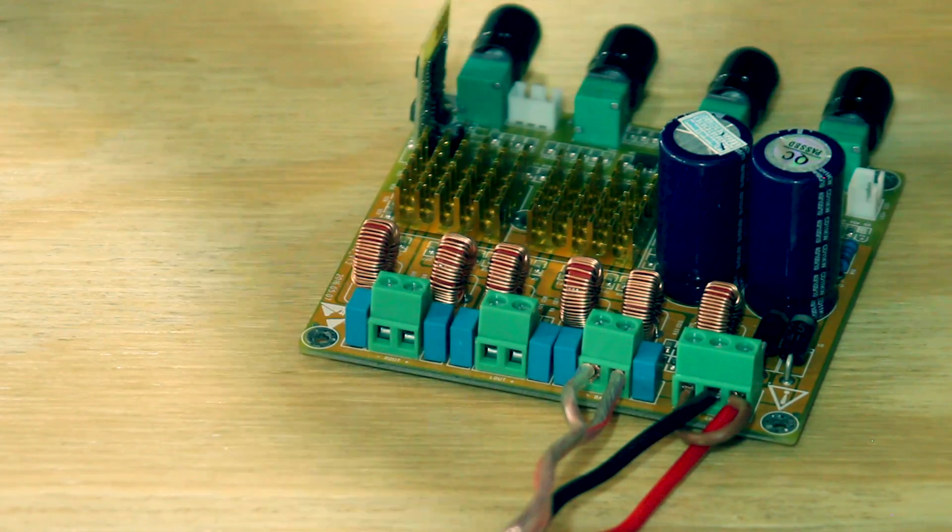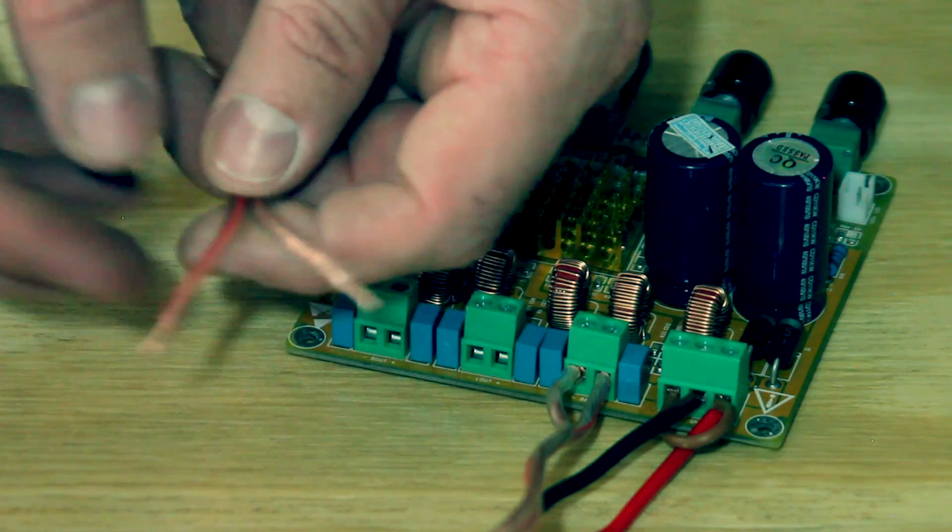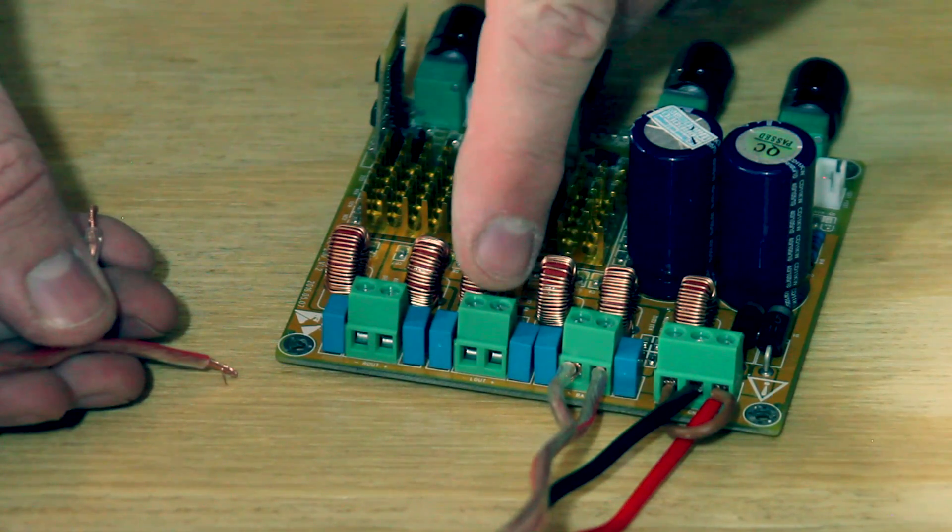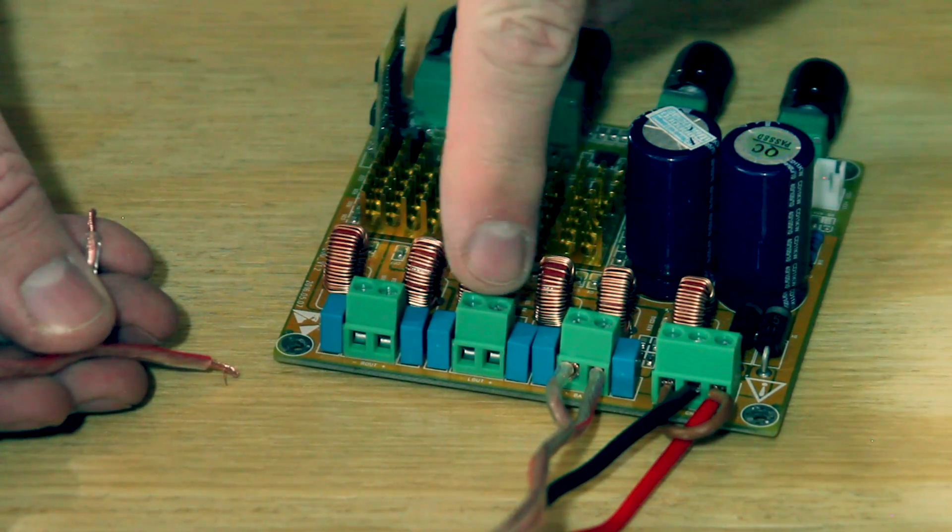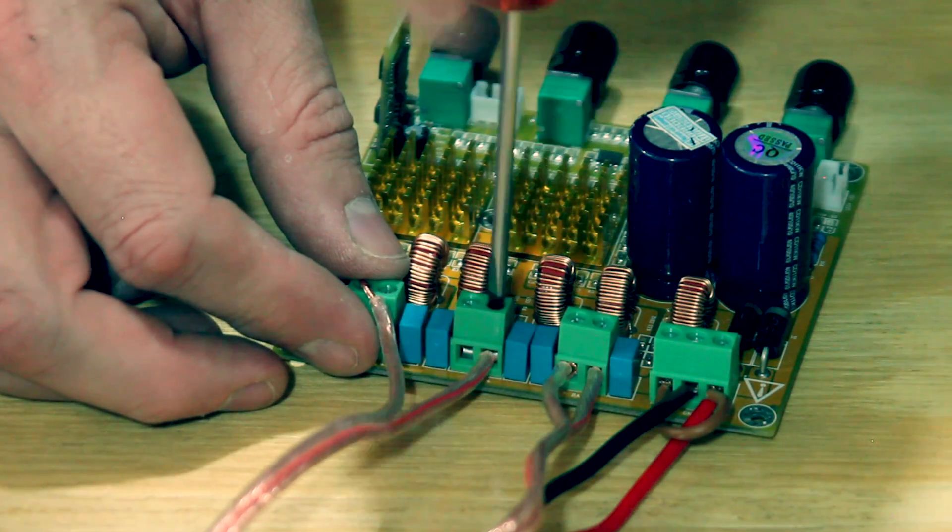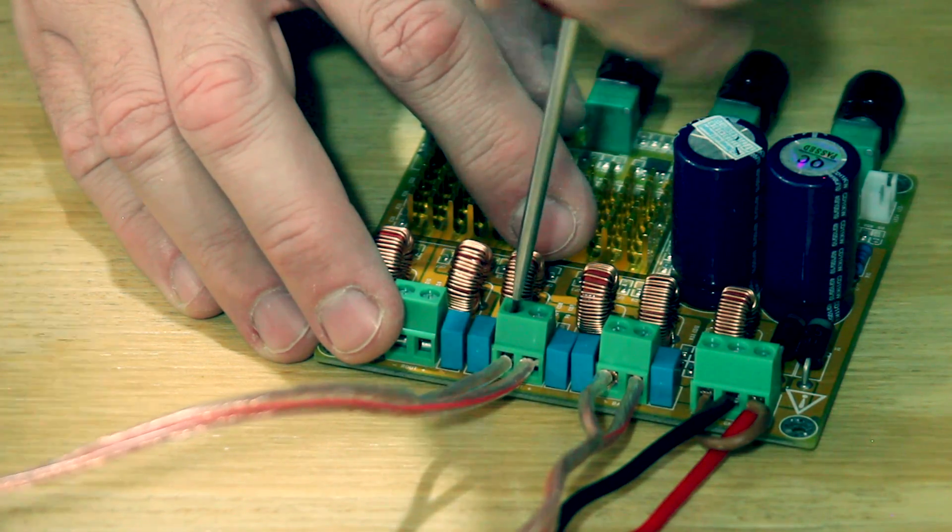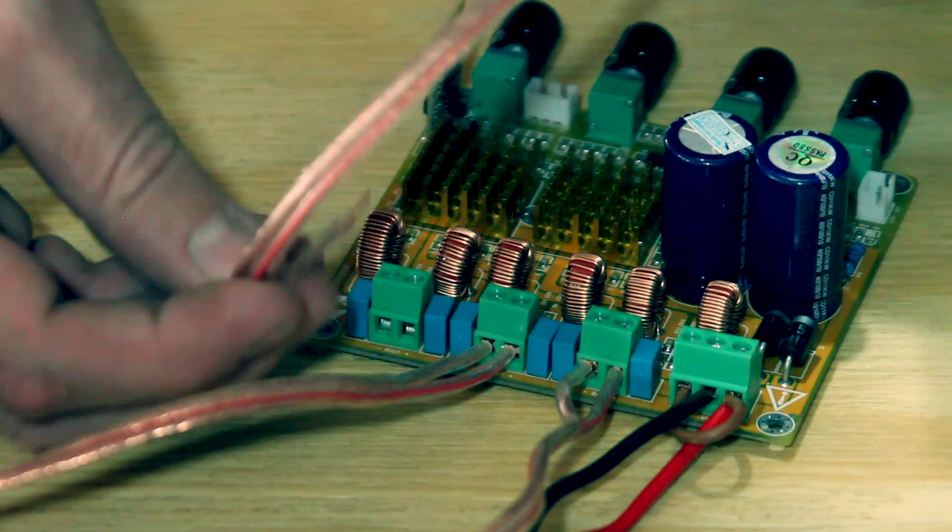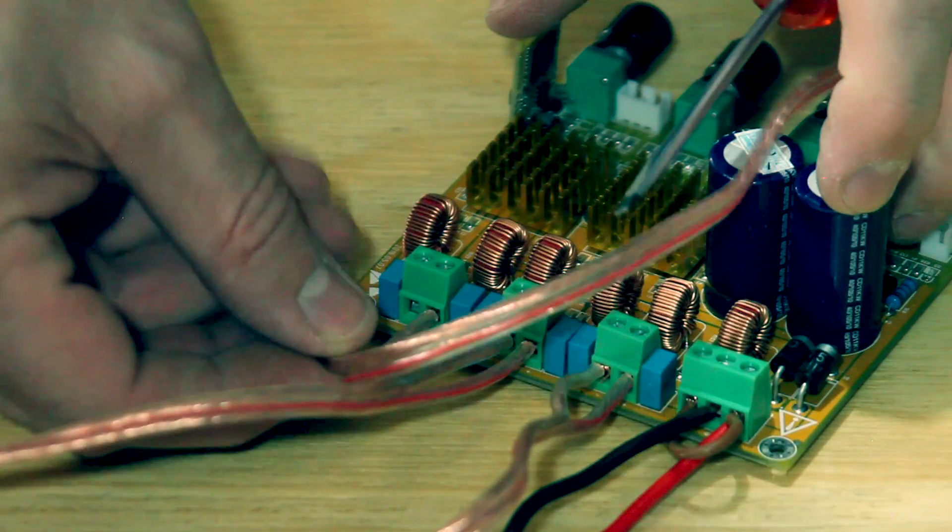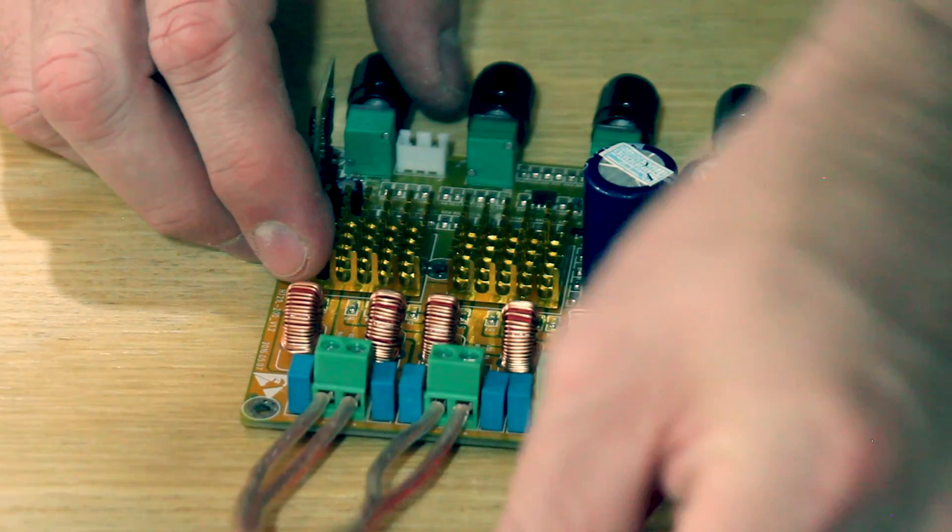Now the full range drivers work in exactly the same way. You have a positive and a negative connected in the same way to your full range driver. And then here you will see it says right and left. So just make sure that your right channel is connected to the right connector and your left channel is connected to your left connector. And that's it. That's how you connect up all your drivers.